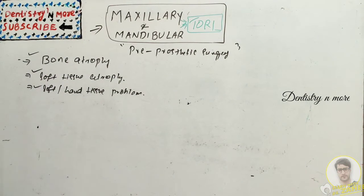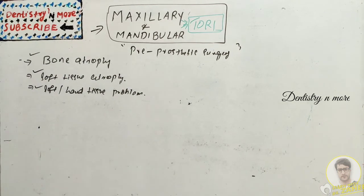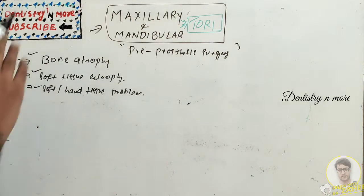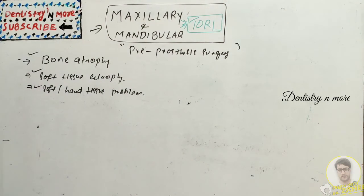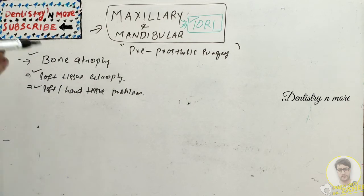We need to perform pre-prosthetic surgery for such patients to receive a prosthesis. There are many bony procedures such as alveoloplasty, alveolectomy, reduction of mylohyoid ridge, reduction of genial tubercles, elimination of unfavorable undercuts, and the tori — which can be maxillary tori or mandibular tori.